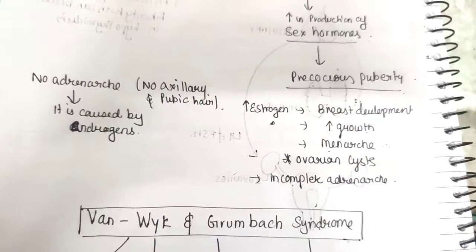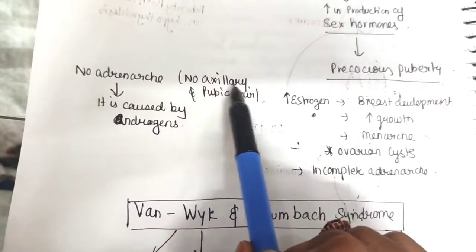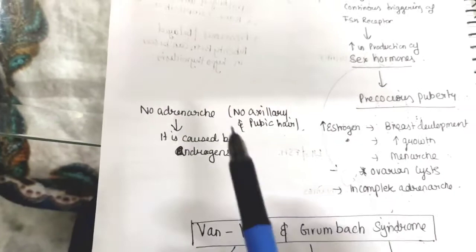The patient will be presenting to you with precocious puberty that is incomplete. Why is there incomplete adrenarche? It means that there will be no axillary and pubic hair. Why is it so? Because we are talking about the effect of estrogen here, high level of estrogen, not androgens.